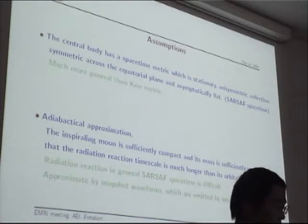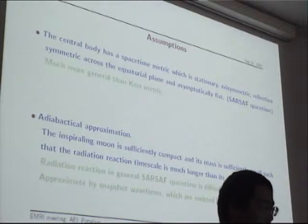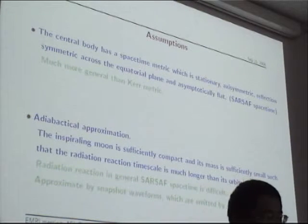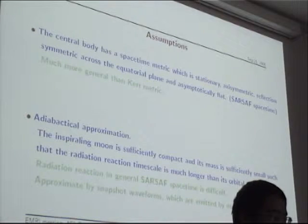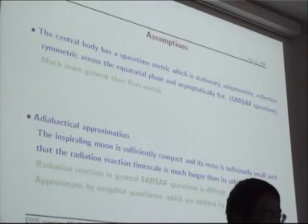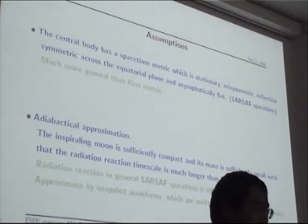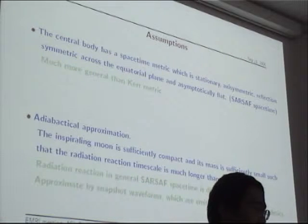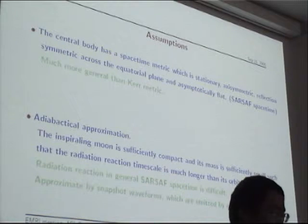These are two assumptions I made. First, I assumed the central body to have a spacetime metric which is stationary, axisymmetric, with reflection symmetry across the equatorial plane, and asymptotically flat. I will use SARSAF to denote this kind of spacetime. Stationary and asymptotically flat is a reasonable assumption. If the central body doesn't have axisymmetry — if it has some bulge or lump — it will emit strong gravitational waves. So if it doesn't emit strong gravitational waves, it must have an axisymmetric spacetime.